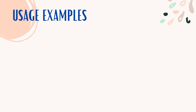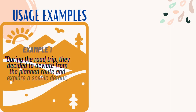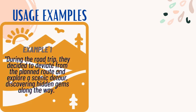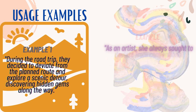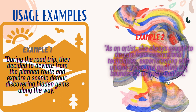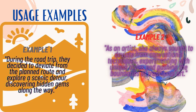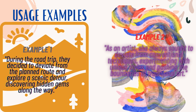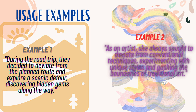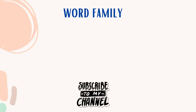Usage examples. Example 1: During the road trip, they decided to deviate from the planned route and explore a scenic detour, discovering hidden gems along the way. Example 2: As an artist, she always sought to deviate from conventional techniques, experimenting with unique styles and pushing the boundaries of traditional art.